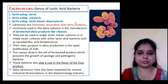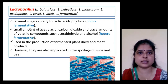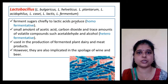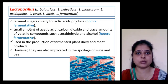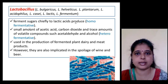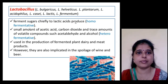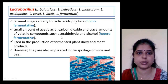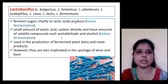Lactobacillus bulgaricus causes the fermentation of sugar and is of two types: homofermentative and heterofermentative. Homofermentative bacteria ferment sugar to lactic acid. In heterofermentative types, in addition to lactic acid, acetic acid, carbon dioxide, and trace amounts of volatile compounds are produced. These are used in the production of fermented plant, dairy, and meat products.